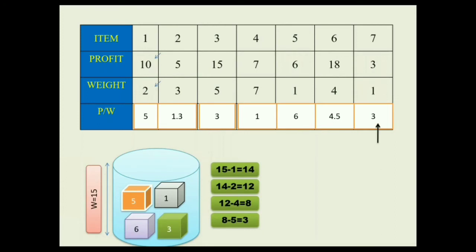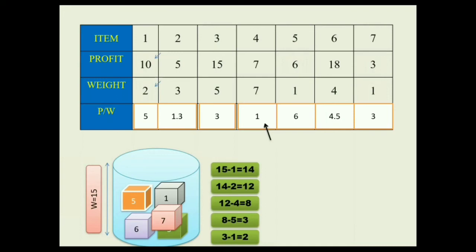The next maximum is item 7 with a weight of 1. We place it; capacity becomes 3 minus 1 equals 2. The next item is item 2 with a weight of 3, which is larger than the remaining capacity of 2, so we cannot place it — we deny that item. Moving to the next item, item 4 has a weight of 7, so we cannot place it either. We check if any more items are left — no, we have checked all items.